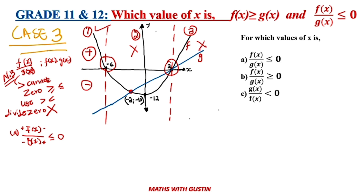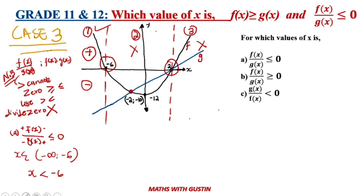Stage 2 is not satisfied — they are both below the x-axis. Stage 3 is also not satisfied — they are both above. So how are you going to classify this? You are going to say: x is an element of all real numbers starting from negative infinity up to negative six, but you do not include negative six. In inequality notation: x is less than negative six. We do not put equal to here because g of x would be zero, and we cannot divide by zero.